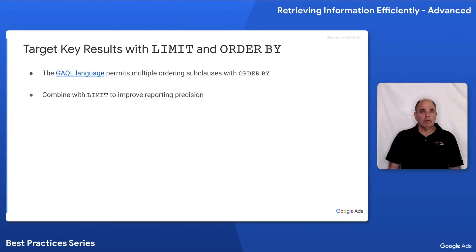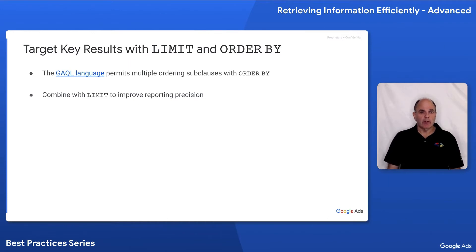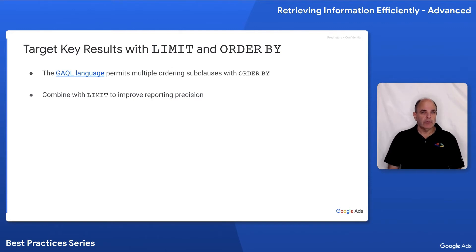The next way to keep the size of a report reasonable is by using the LIMIT and ORDER BY clauses. The LIMIT clause behaves like a standard SQL limit and is more intuitive than the LIMIT clause that existed in the AdWords API. Just specify a LIMIT to cap the number of rows that you receive. In combination with ORDER BY, you could take the top-end results.